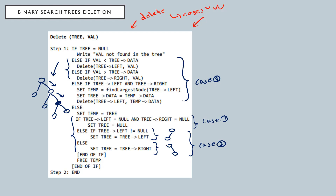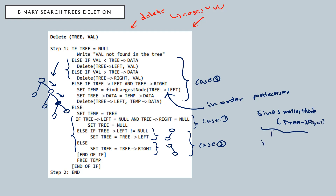In case three, the algorithm searches down the tree for the node to be deleted. 'Find the largest node' means we are considering the in-order predecessor. You can also replace that statement with 'find the smallest node' and search from the right side — that would be the in-order successor. After finding the value, it is deleted and the memory is freed. If the value does not exist in the tree, it simply prints that the value is not found.